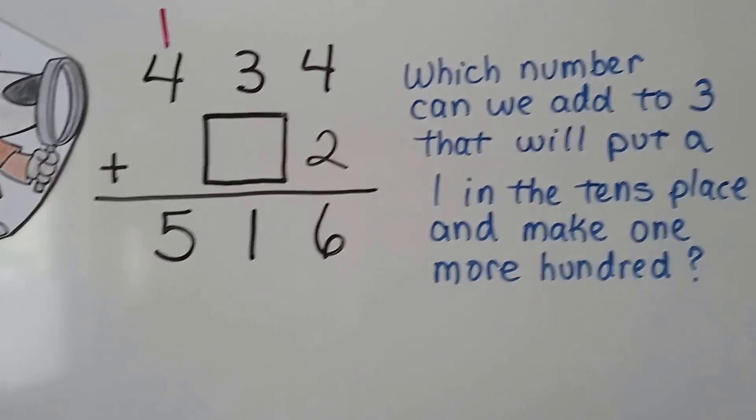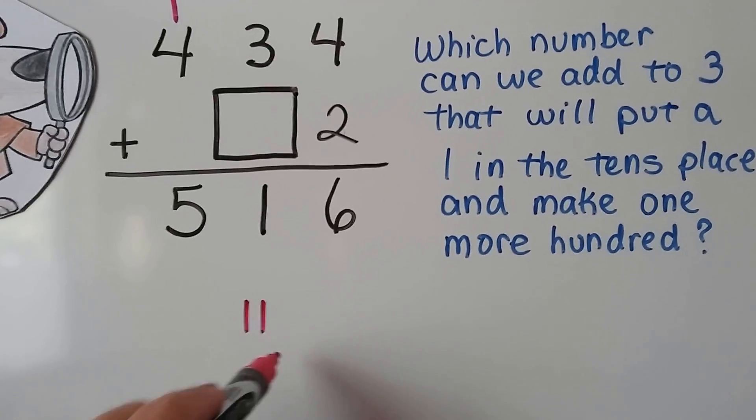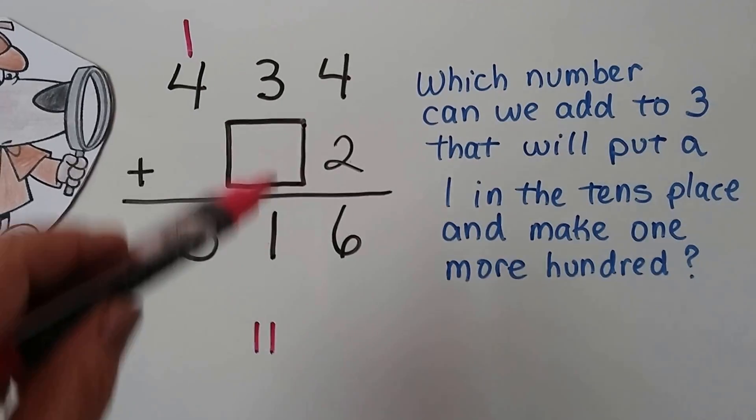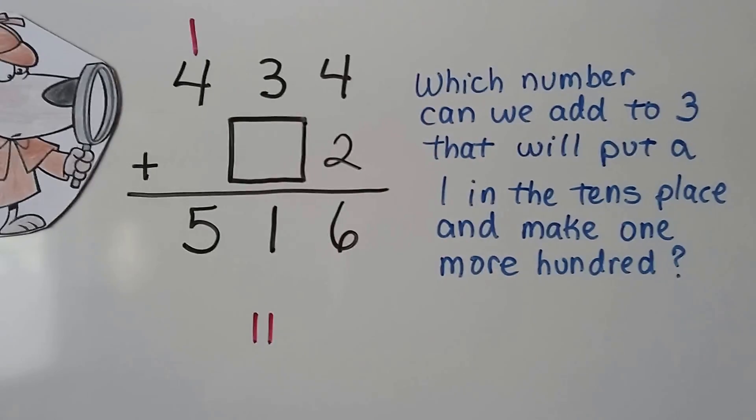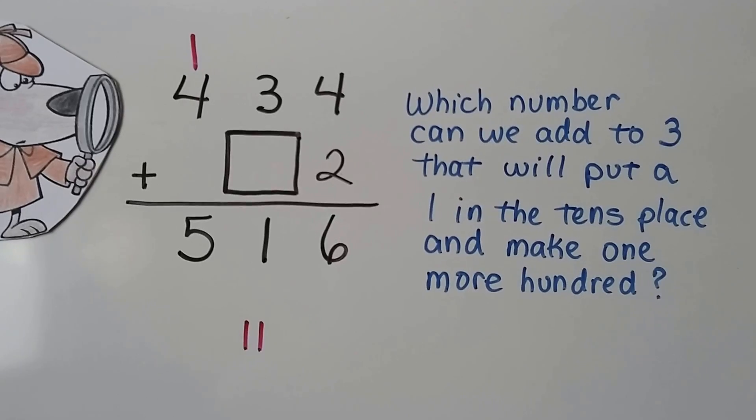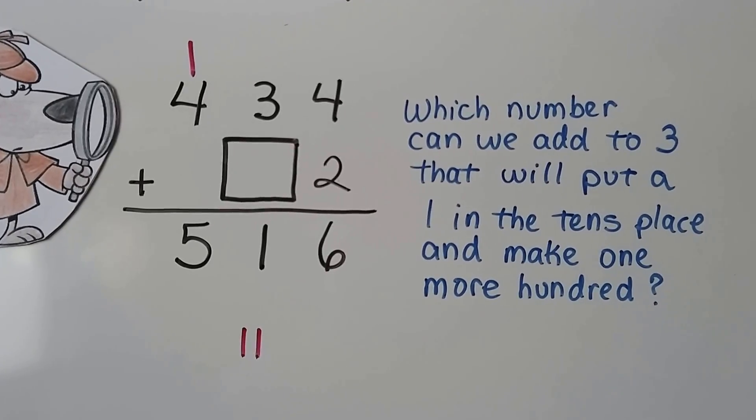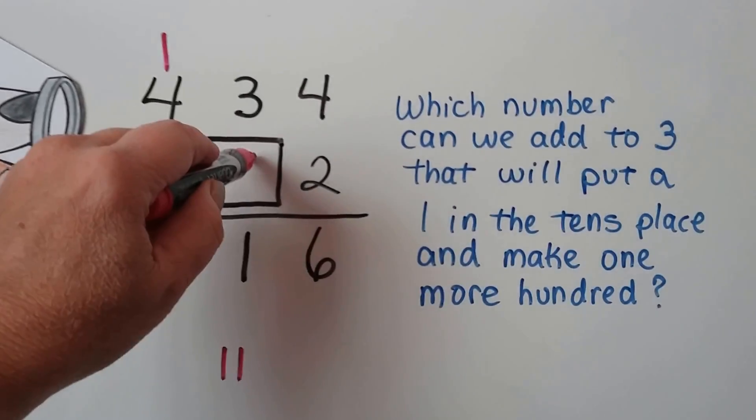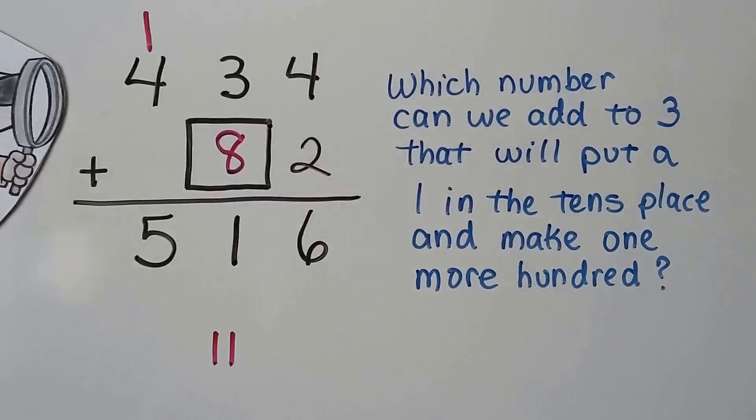Because that's really an 11. We just regrouped that 1 up to there. So 3 plus something equals 11. Do you know what we can add to 3 to make 11? It would be an 8. 8 plus 3 equals 11.